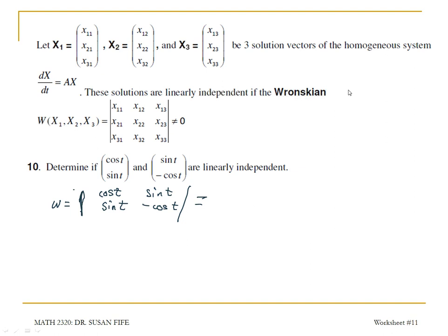Okay, so finding the determinant, I need to multiply cosine t and negative sine t. That's gonna give me a negative cosine squared t minus sine t times sine t is sine squared t.